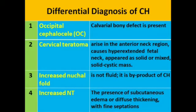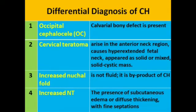Differential diagnosis of cystic hygroma: First, occipital cephalocele — in occipital cephalocele, there will be a bony defect in the calvarium. The second differential to be made is cervical teratoma. The cervical teratoma arises in the anterior neck region, causes hyperextension of the fetal neck, and appears as a solid or mixed solid-cystic mass.